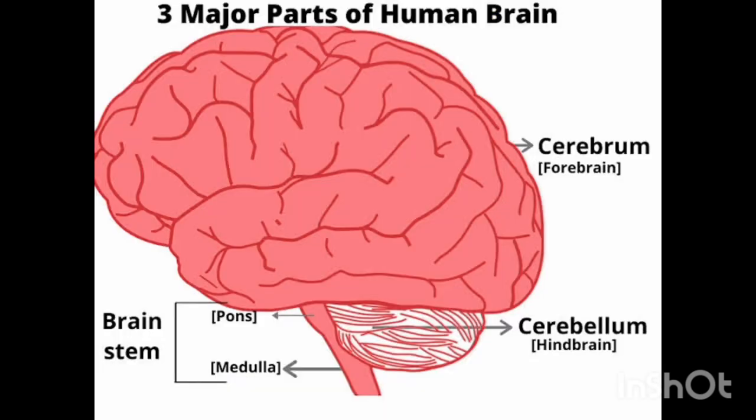You can clearly see the three major parts of the human brain. The largest part of the forebrain is the cerebrum. The cerebellum is the part of the hindbrain, while the brain stem, which contains the pons and medulla, is the part of the midbrain.